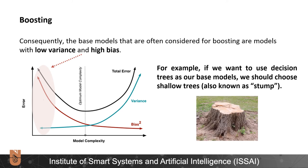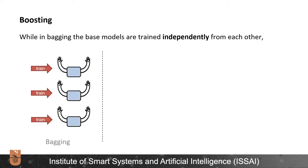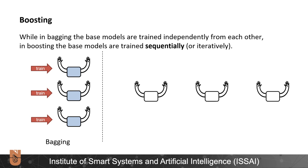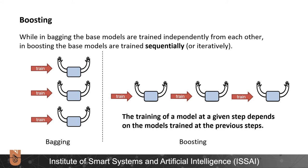For example, if we want to use decision trees as our base models, we should choose shallow trees, which are also known as stumps. While in bagging the base models are trained independently from each other, in boosting the base models are trained sequentially. Thus, the training of a model at a given step depends on the models trained at the previous steps.